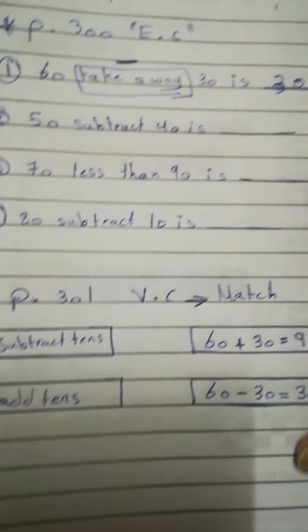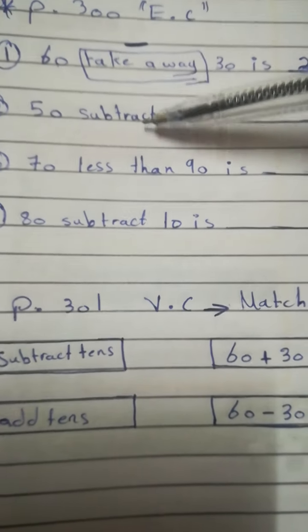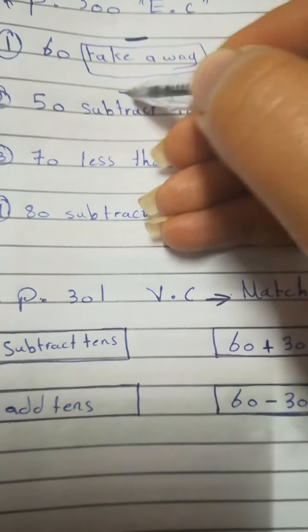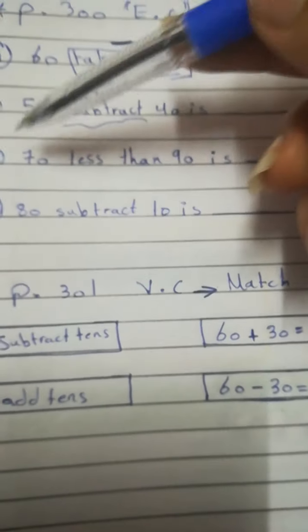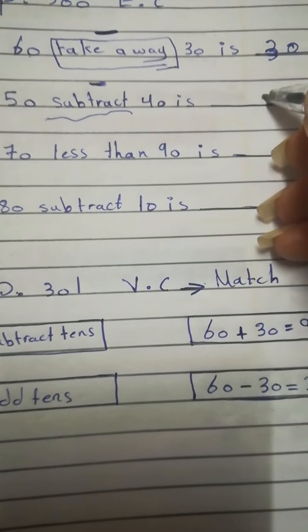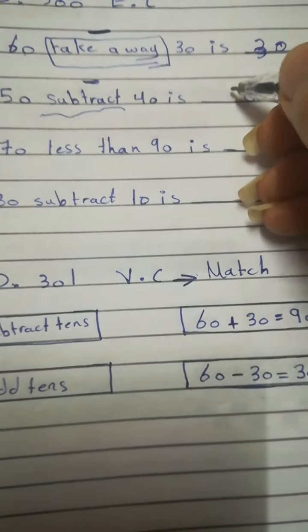Now, number 2. 50 subtract. Subtract means minus also. Okay? Subtract means minus. 50 minus 40. 0 minus 0 is 0. 5 minus 4 is 1.